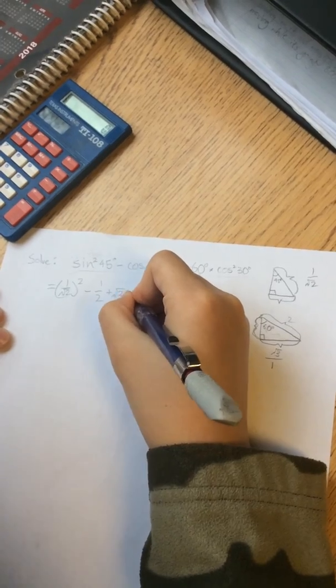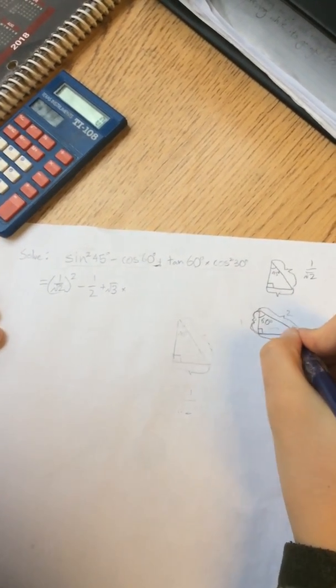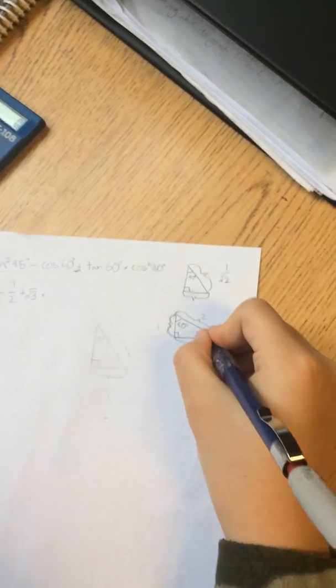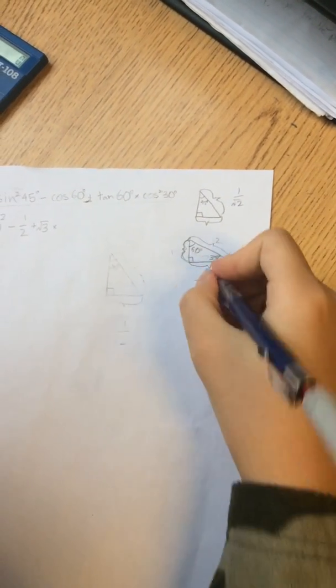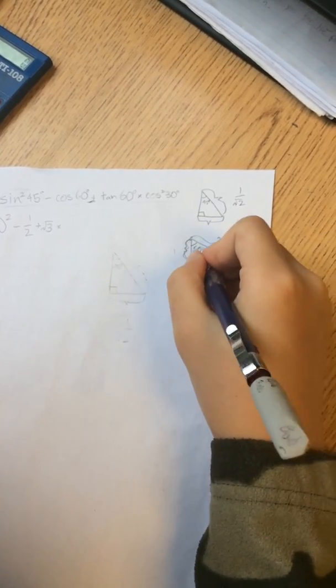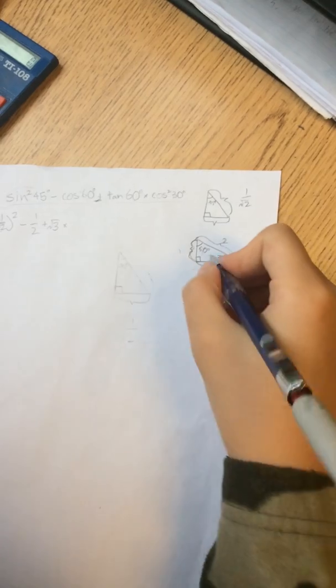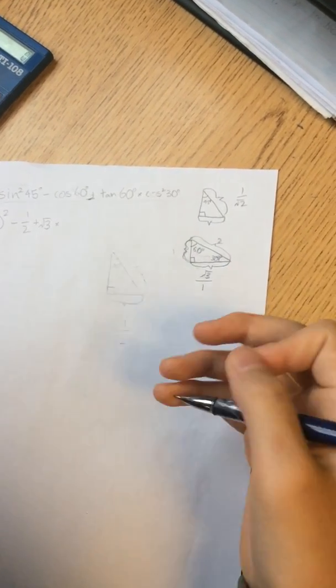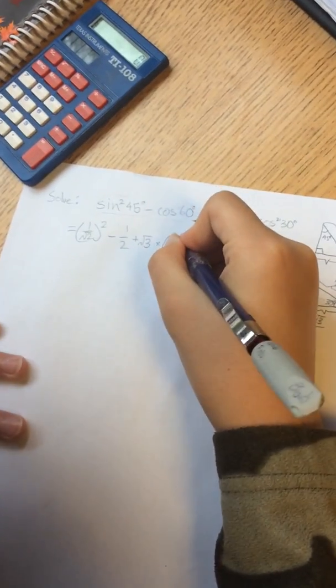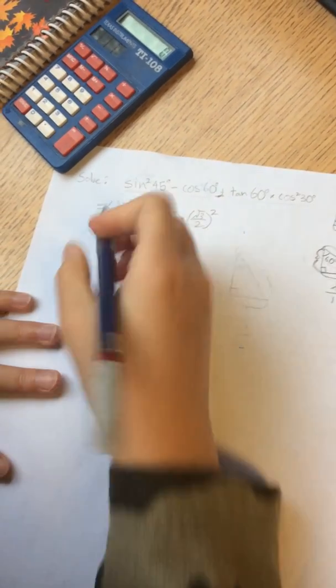And then you've got to multiply it by cosine square of 30 degrees. And this is 30 degrees. So the cosine of this would be square root of 3 over 2. Because, you know, we know the ratio between these two sides. Because it's a 60 degree right triangle. So it's times square root of 3 over 2 squared. Then let's simplify this.